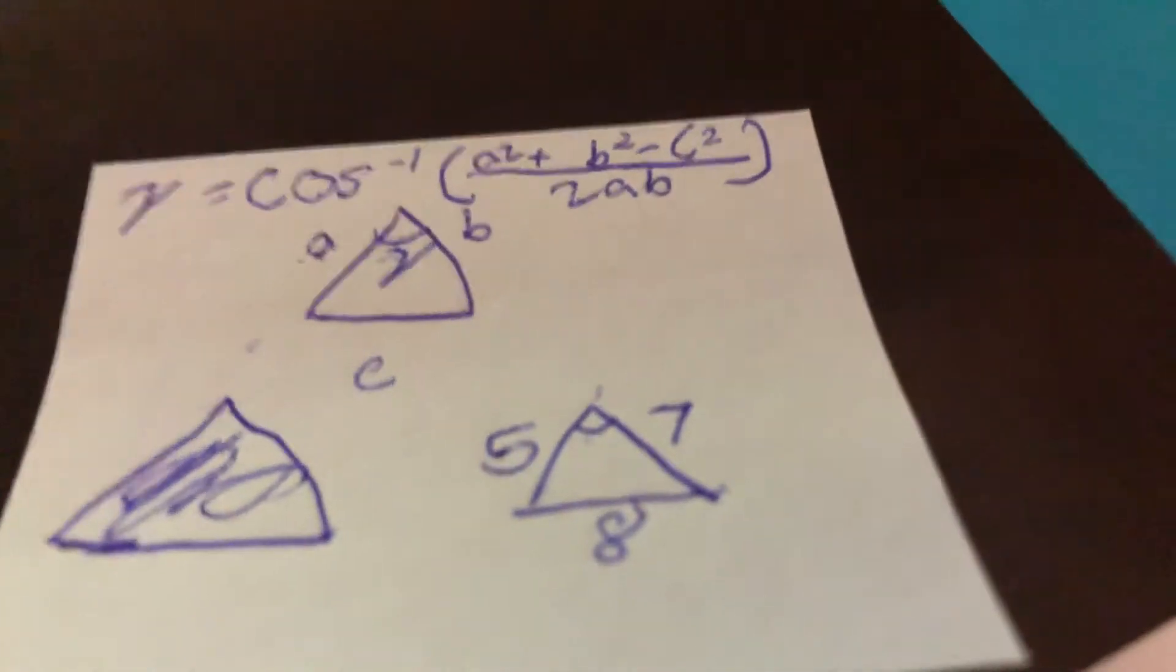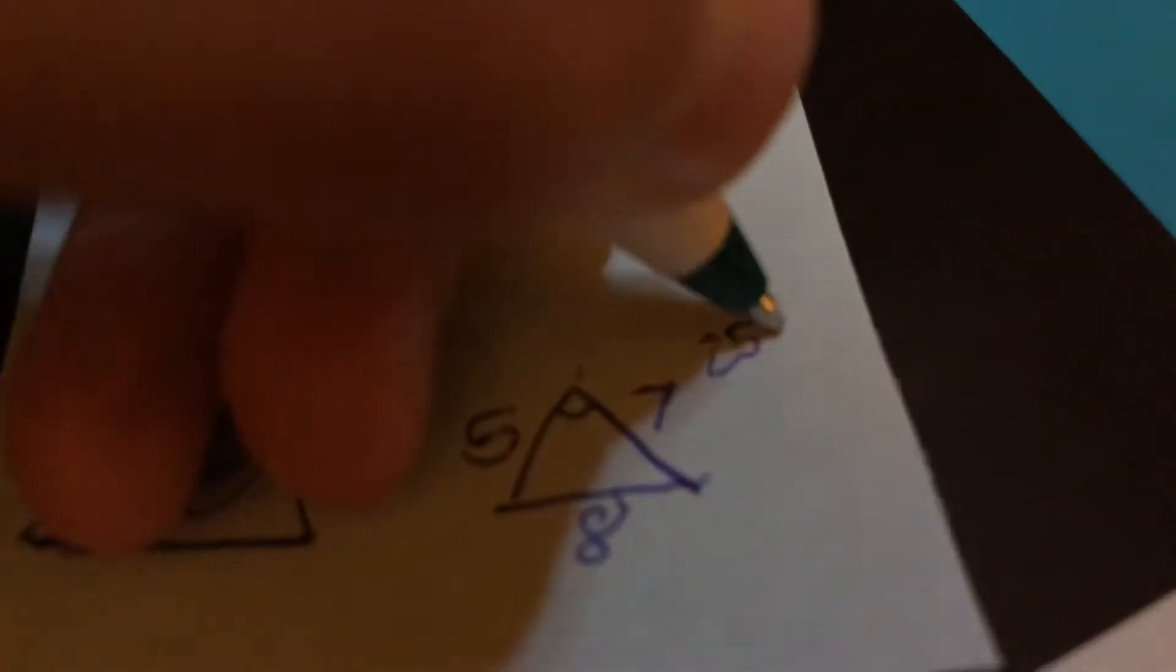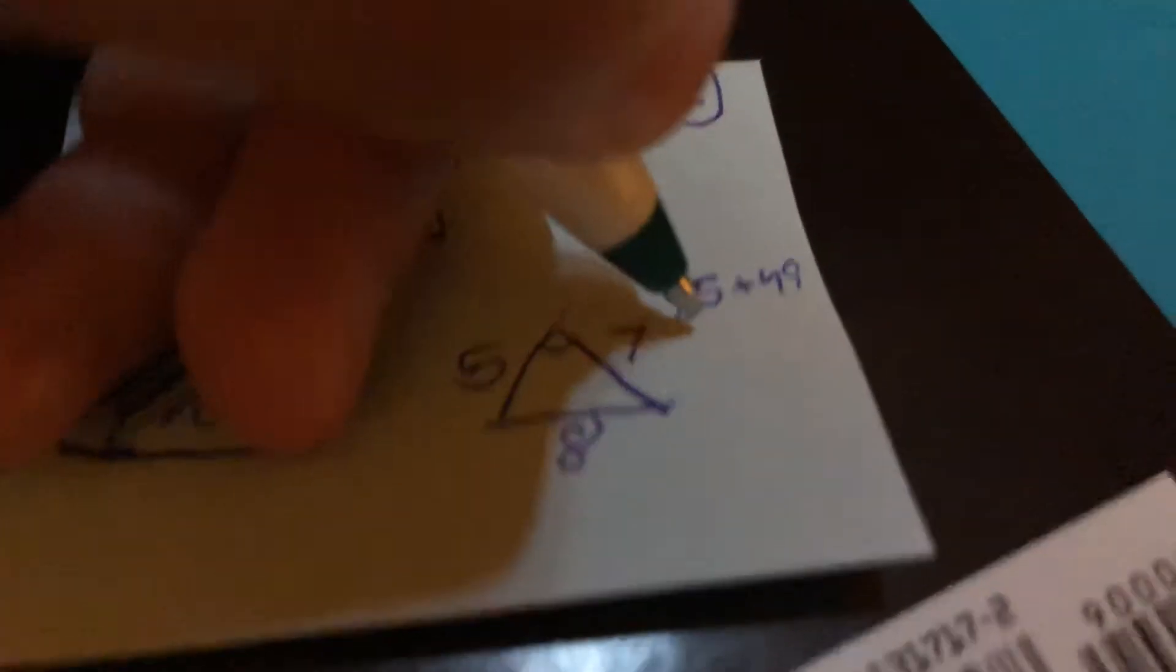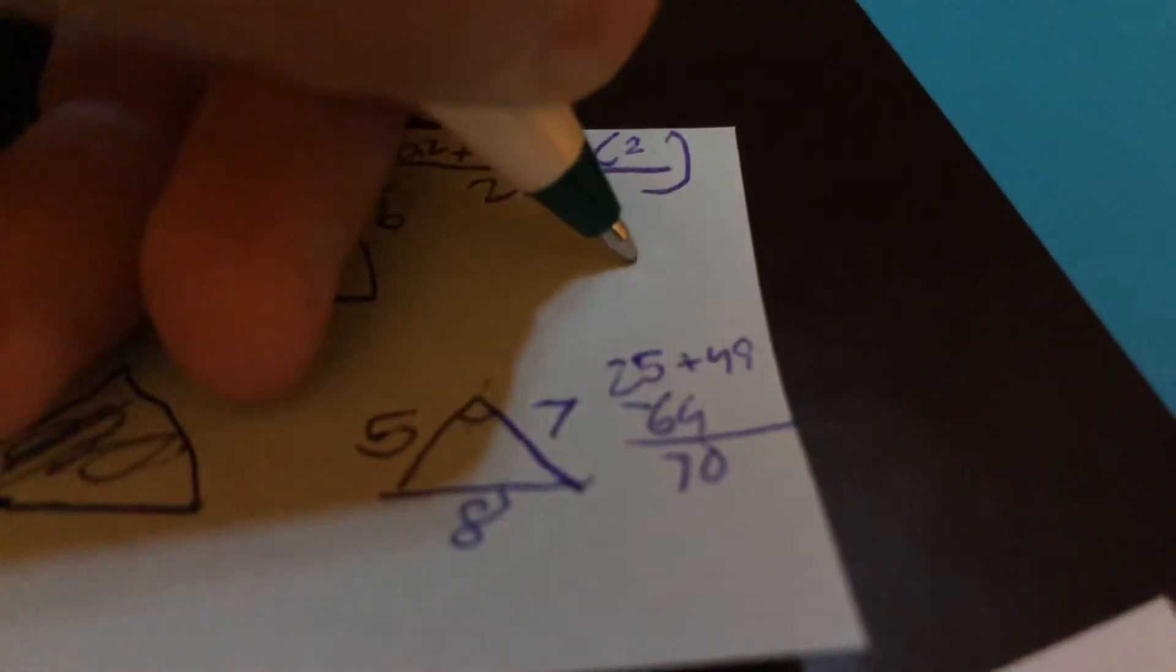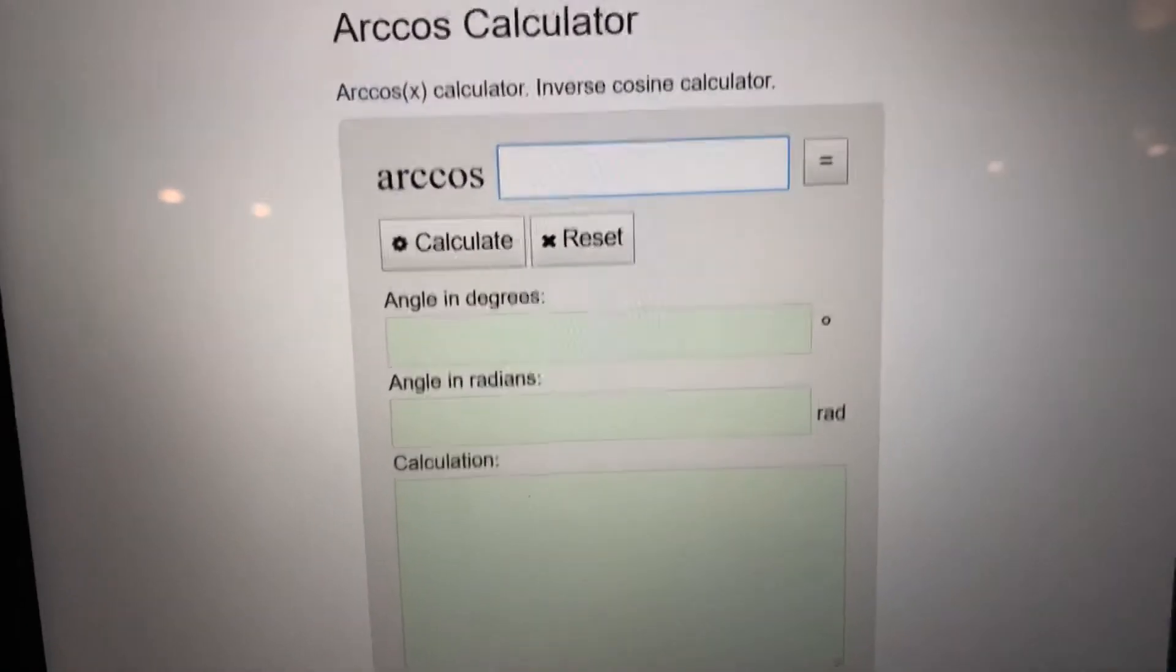First angle: a squared—a is 5, so 25. B squared—b is 7 in this case, so 49. C squared—c is 8 in this case, so 64. 25 plus 49 is 74, minus 64 is 10. This is all going to be over 2ab. 2ab is 35 times 2, which will be 70. So 10 over 70, one-seventh, is approximately 0.143 in decimal form.